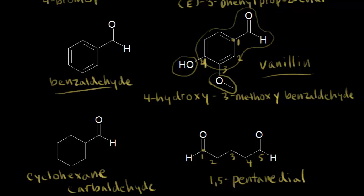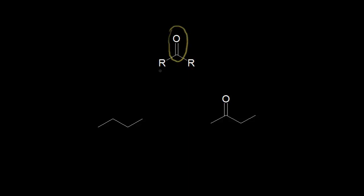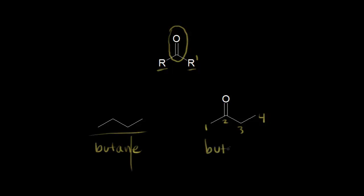Let's look at ketone nomenclature next. Just to remind you of the general structure of ketones: you have a carbonyl — a carbon double bonded to an oxygen — and this time you have two alkyl groups, which could be the same or different. Once again we looked at butane earlier — our four-carbon alkane. For a four-carbon ketone, it's an ONE ending, so it would be butanone. We drop the E and add ONE, so butanone gives us the IUPAC name for this molecule.